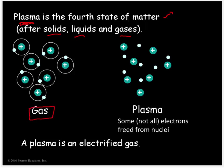Plasma is essentially an electrified gas. In a normal gas, we have a positively charged nucleus with electrons whizzing around it. If we add more energy and break these electrons away from the positively charged nuclei, they're free to roam around — they're no longer bound to their nucleus. This means the electrons can wander around and conduct electricity. So essentially a plasma is an electrified gas with free electrons.